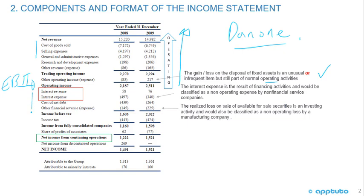Below the operating income — EBIT, earnings before interest and taxes — we get interest revenue or expenses. The interest expense is the result of financing activities and would be classified as a non-operating expense by a non-financial services company.